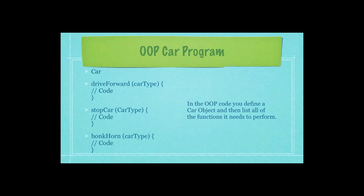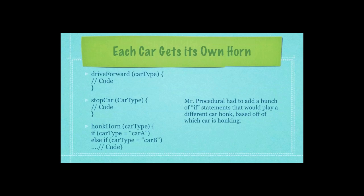An object-oriented programmer would instead go in and define an object named car, and then afterwards define those functions that object car should have. Just like the procedural programming, the ability to drive forward, stop, and honk.